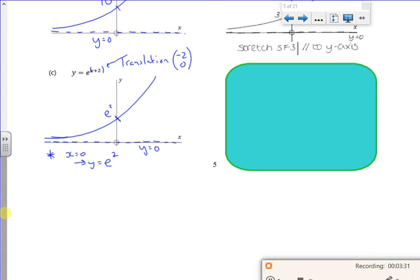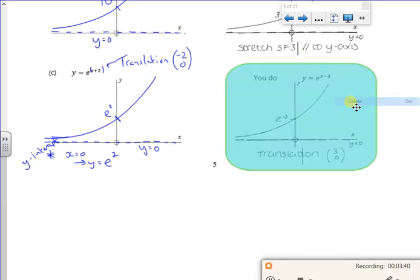It still has an asymptote there of y equals 0. So I've just looked to where it crosses the y axis. So the y intercept. There's one for you, so hopefully you've done that one.